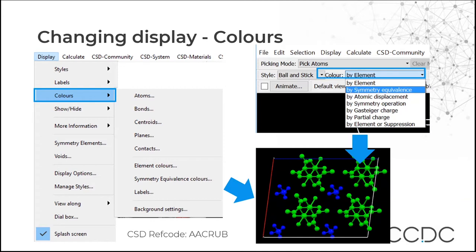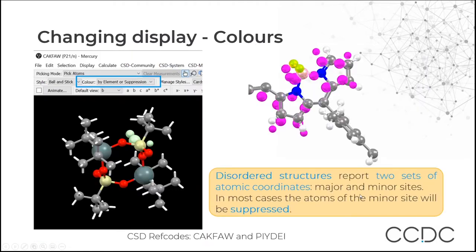As well as changing styles, you can also change colors. Go to Display, Colors, and you'll find a number of options. Like Style, there is also a dropdown in the toolbar at the top. For example, you can color by symmetry equivalent. You can also color by elemental suppression — when a crystal structure has disordered atoms with two sets of atomic coordinates, the minor occupancy sites are normally suppressed in the CSD. You can color those minor occupancy sites in a different color, and two examples of that are shown here.